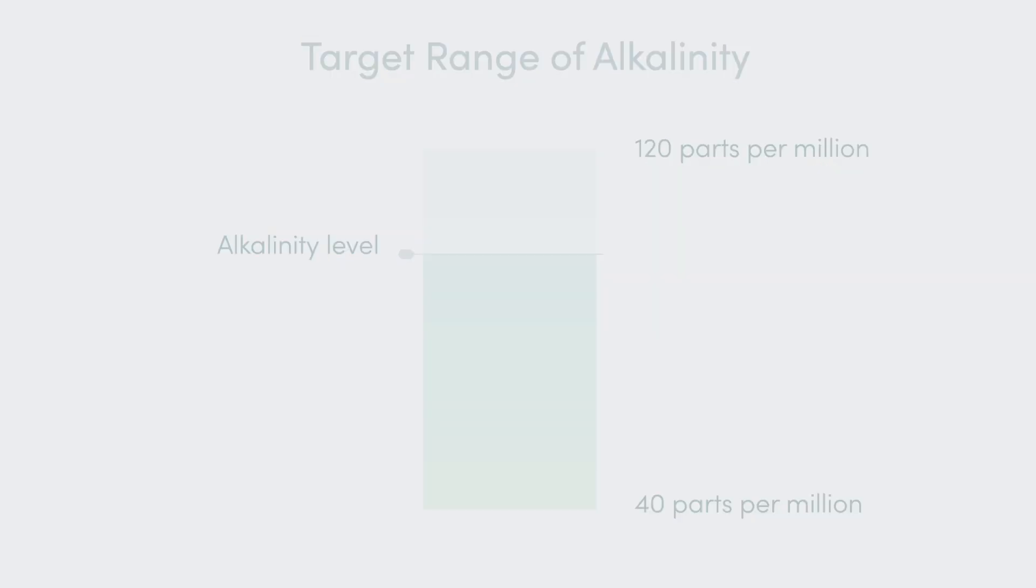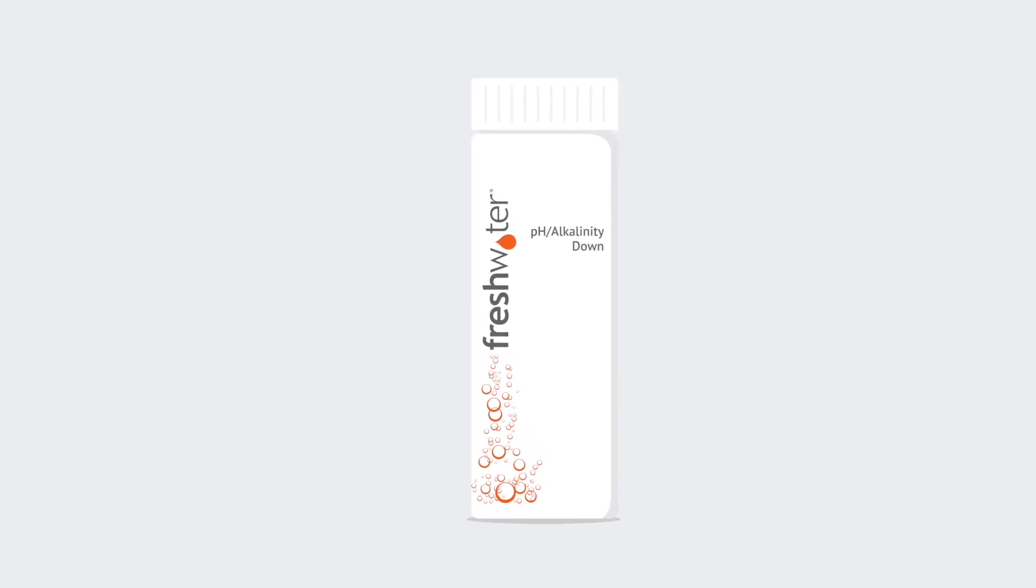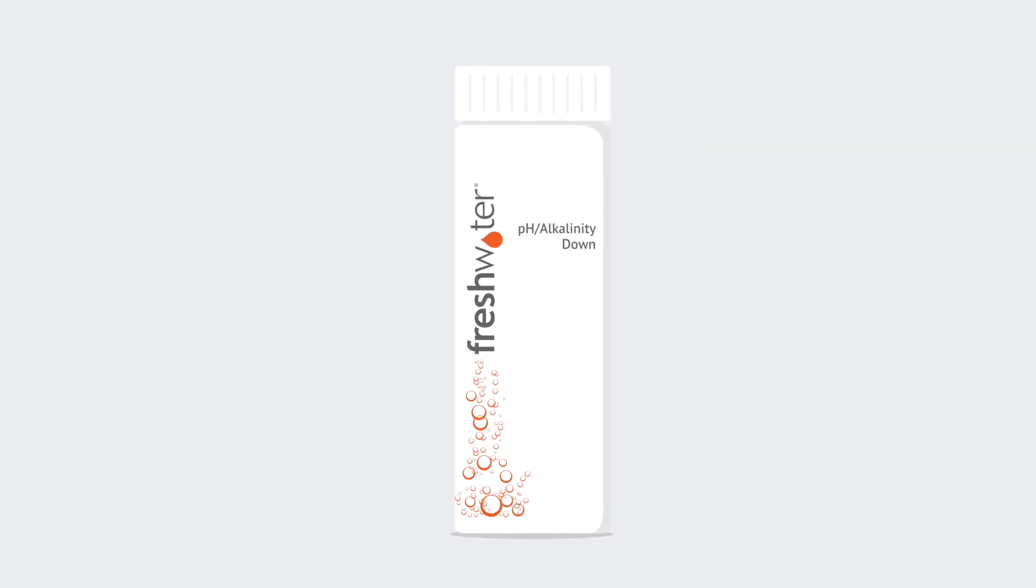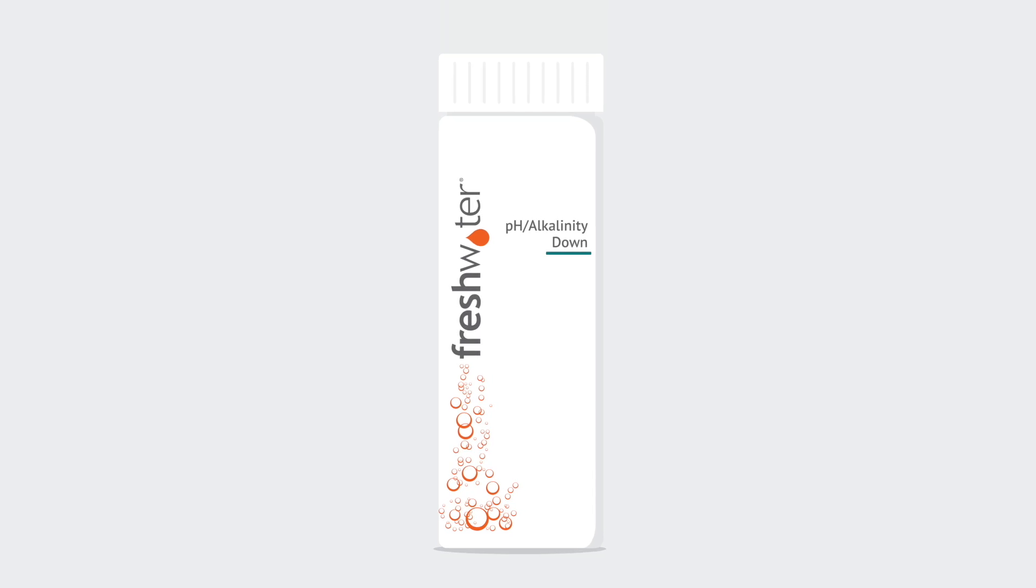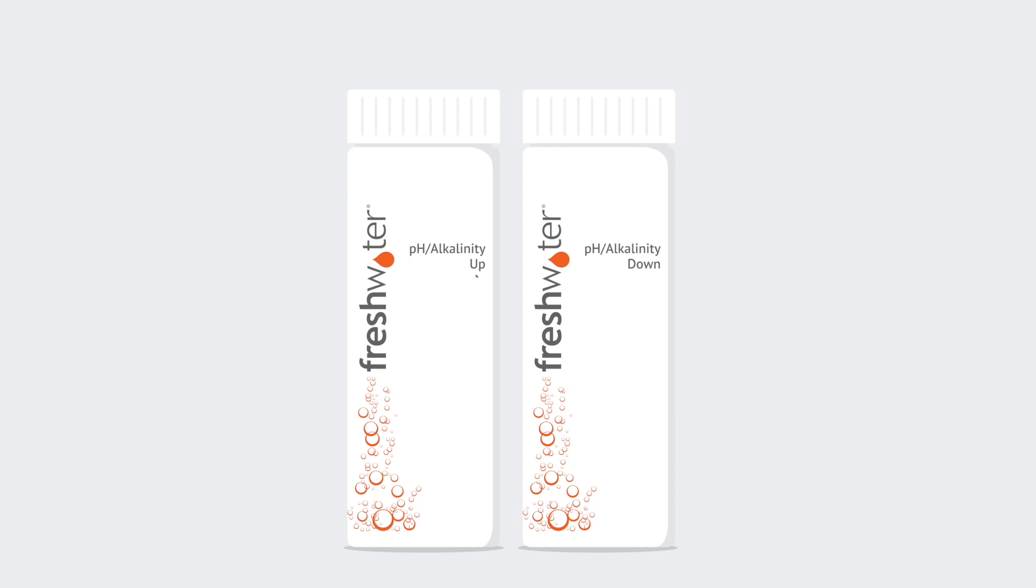If the alkalinity level in the water is too high, you'll need to use freshwater pH/alkalinity down to decrease it. If the alkalinity level is too low, you'll need to use freshwater pH/alkalinity up to increase it.